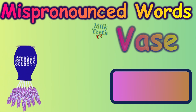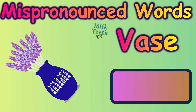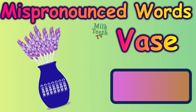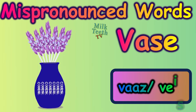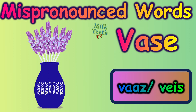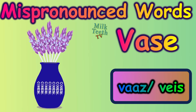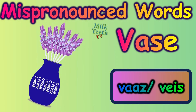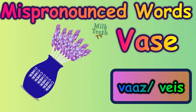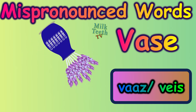Now we are looking at this four-letter word for a piece of decoration in which we keep decorative flowers. This word has two different pronunciations. In British English, it is usually called a vase — the S here gives a Z sound. But in American English, it is pronounced as a vase. Both pronunciations are correct — vase or vase.